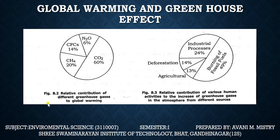The contributions to global warming are: CO2 at 60%, CH4 at 20%, CFC at 14%, and N2O at 6%. Regarding relative contributions of various human activities to increased greenhouse gases: industrial processes contribute 14%, and burning of fossil fuels contributes 24%, totalling about 49%.